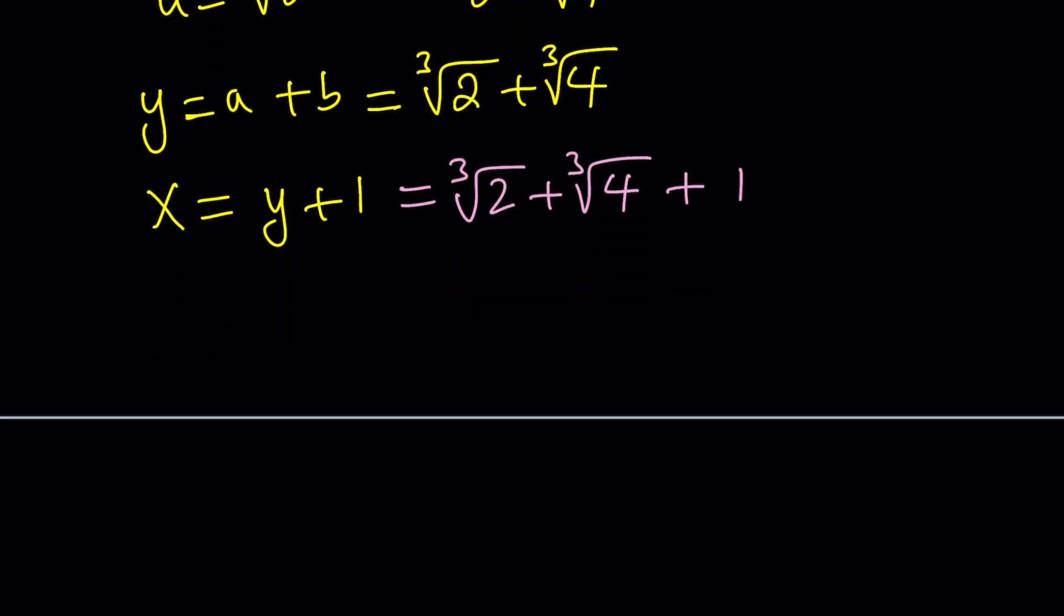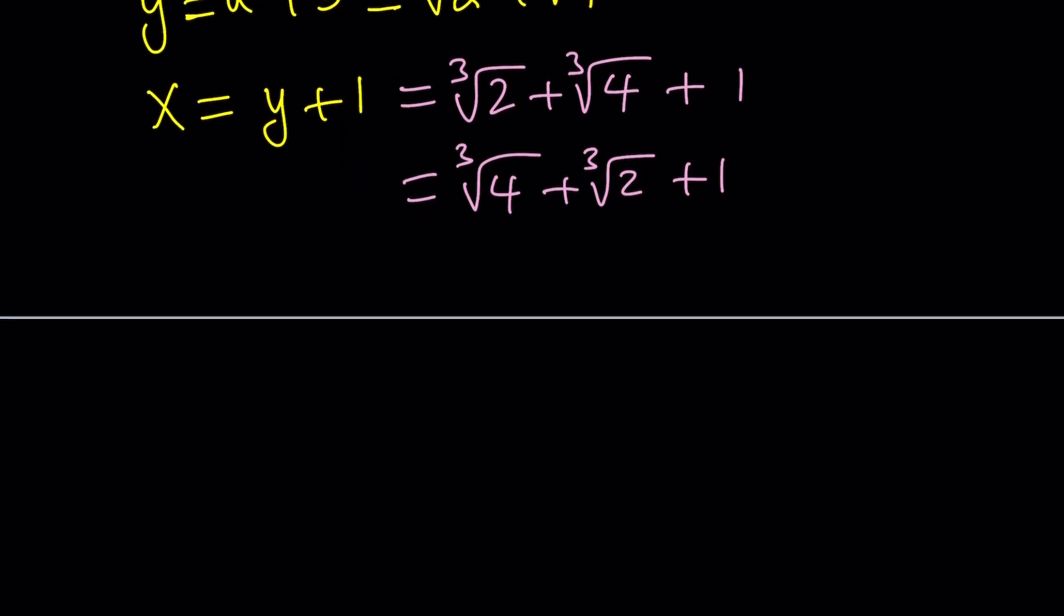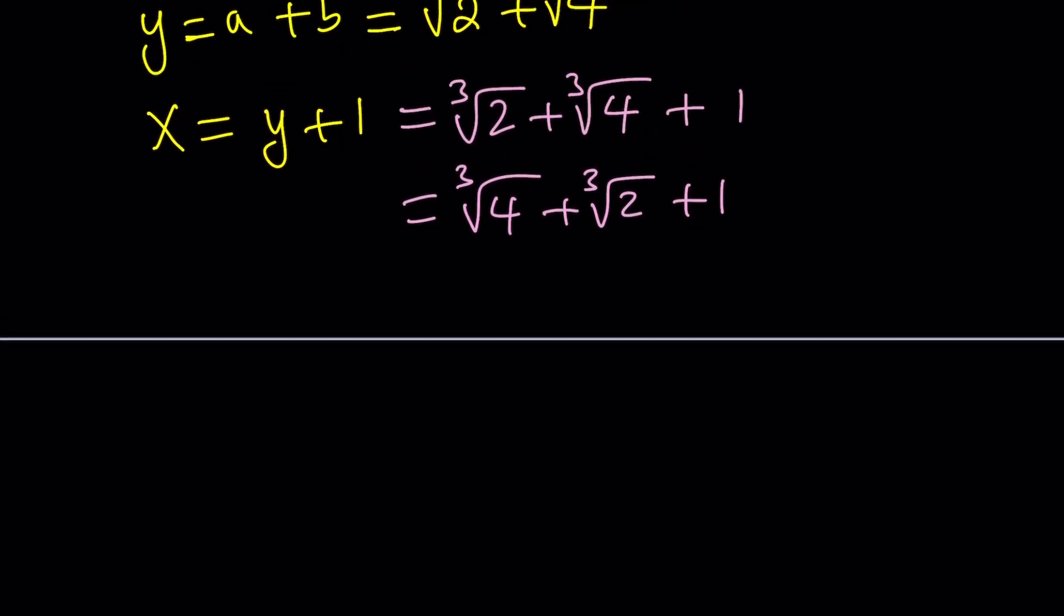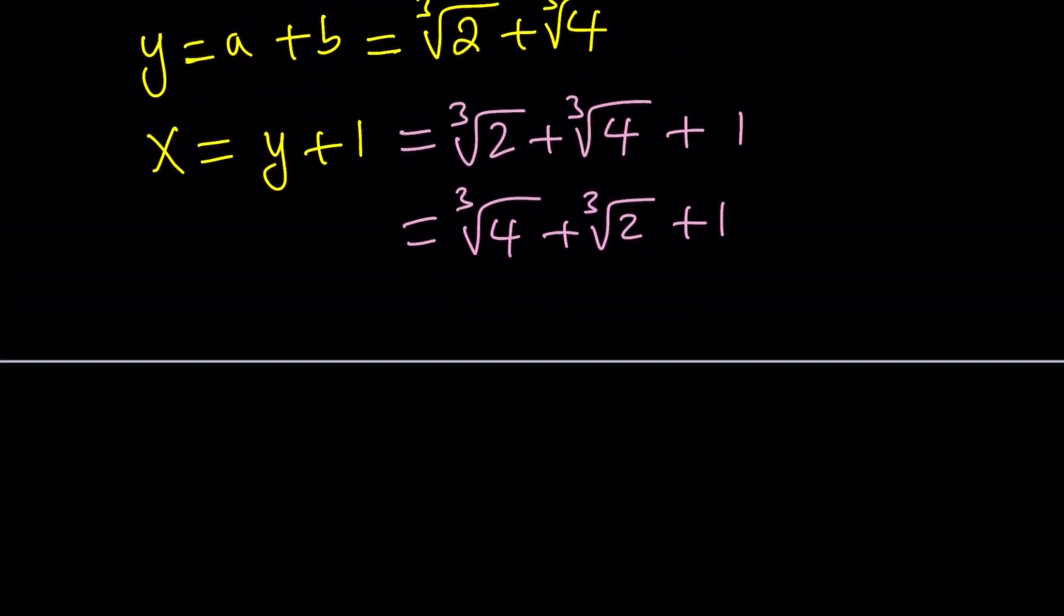And if you want to write the cube root of 4 first, because that seems to be in, I don't know, is it in numerical order, whatever? You can. Because it looks like, I want to say that 1 is the smallest number in this case, but that's not the case anyways. So, you can write in different ways. Let's go ahead and take a look at the second method, and we'll finish up with that.